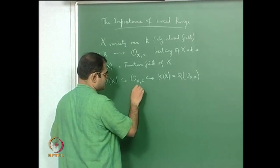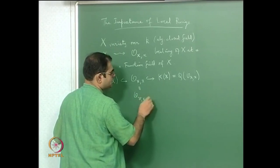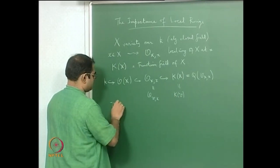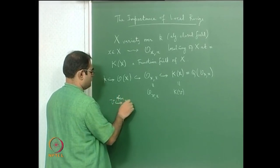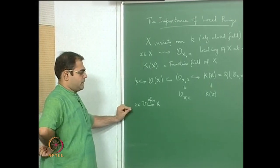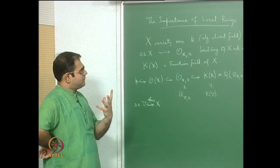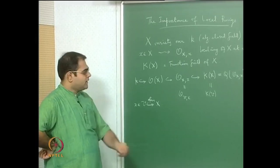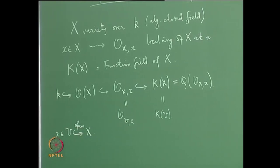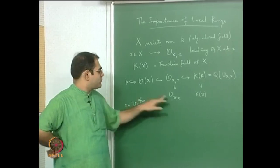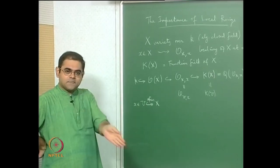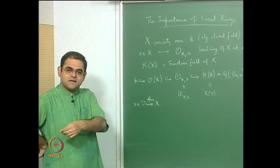The local ring does not change if you go to a smaller open set, and the function field also does not change if you go to a smaller open set, because the smaller open set is actually not so small. Any non-empty open set of a variety is irreducible and in fact it is dense, so what you are throwing out — the boundary — is just a very small set.